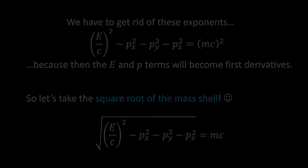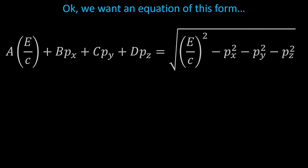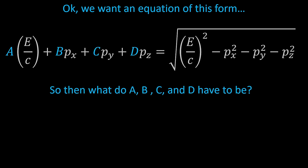We're going to write out the form we want it to take. On the left side we have: a times energy plus b times momentum in x, plus c times momentum in y, plus d times momentum in z. We say by fiat that this equals the square root of the four-momentum dotted with itself — that expression under the square root with the squares of energy and momentum. The question is: what are a, b, c, and d?